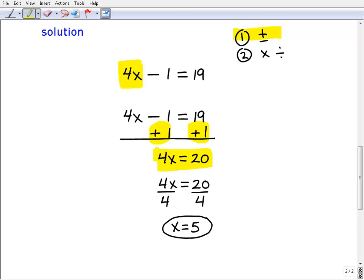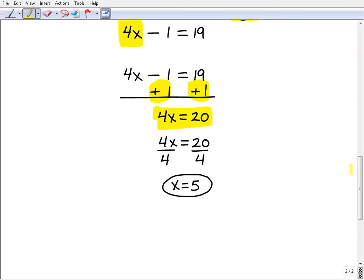Where I'm going to do my second step, which is either multiply or divide. In this case, it's going to be to divide both sides of the equation by 4. Alright, so I got 4x equals 20, I'm going to divide both sides of the equation by 4, and that's going to give me the answer x equals 5.